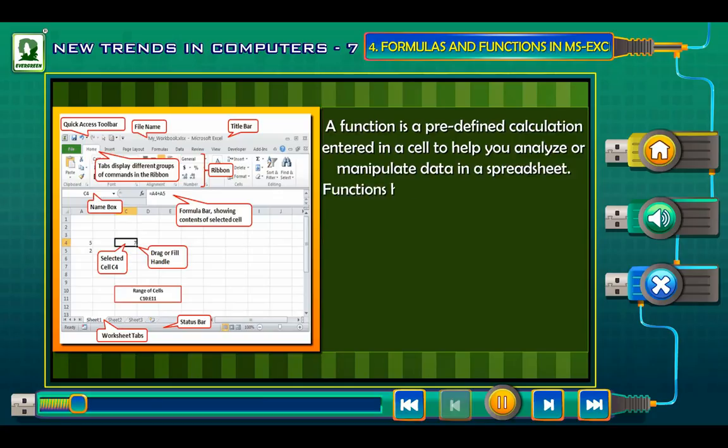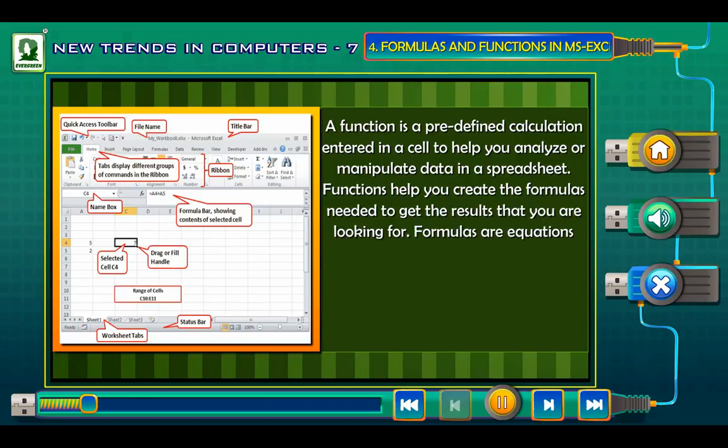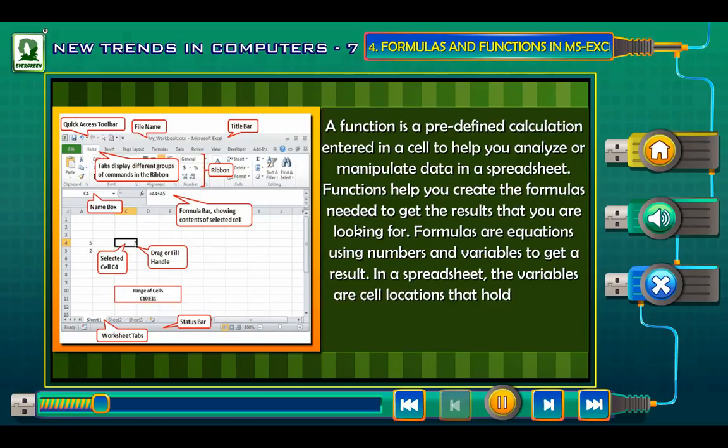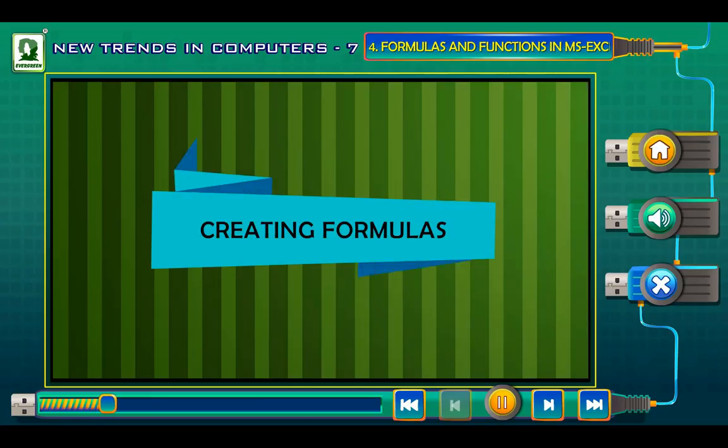Functions help you create the formulas needed to get the results that you are looking for. Formulas are equations using numbers and variables to get a result in a spreadsheet. The variables are cell locations that hold the data needed for the equation to be completed.